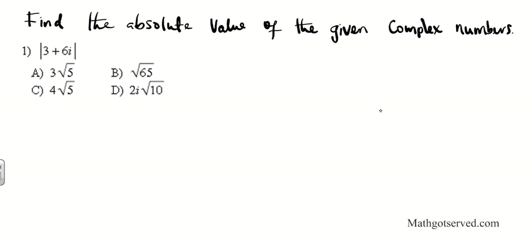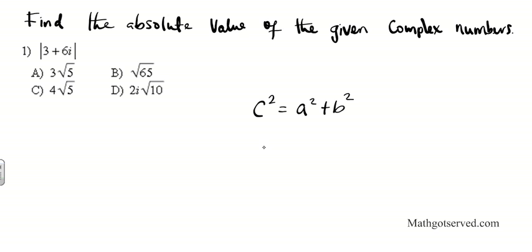So when you are finding the absolute value of complex numbers, it is as though you are employing the Pythagorean theorem. We know from the Pythagorean theorem that c squared equals a squared plus b squared. So c is actually what the absolute value is, or the length of the complex number from the origin. So if c squared is a squared plus b squared, then c is equal to the square root of a squared plus b squared.